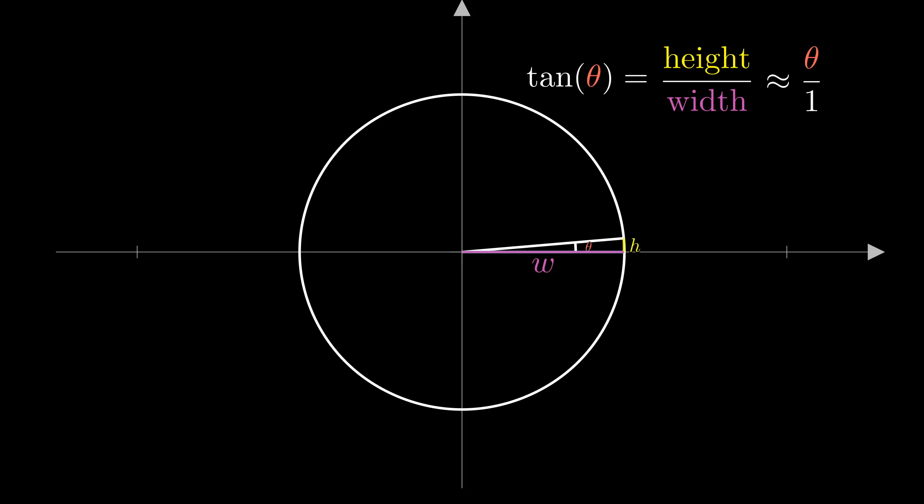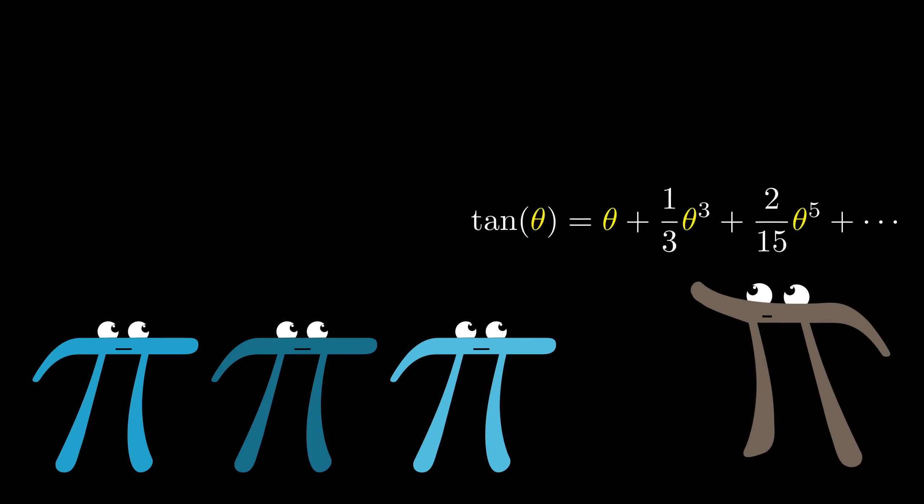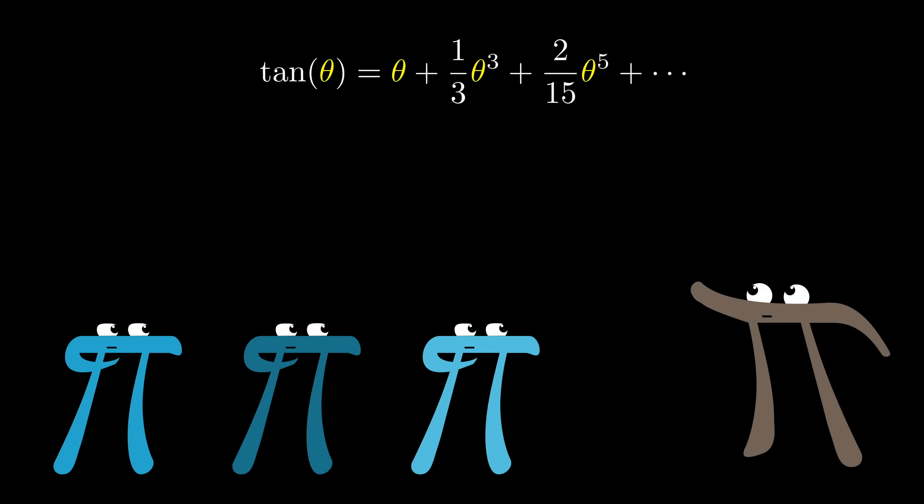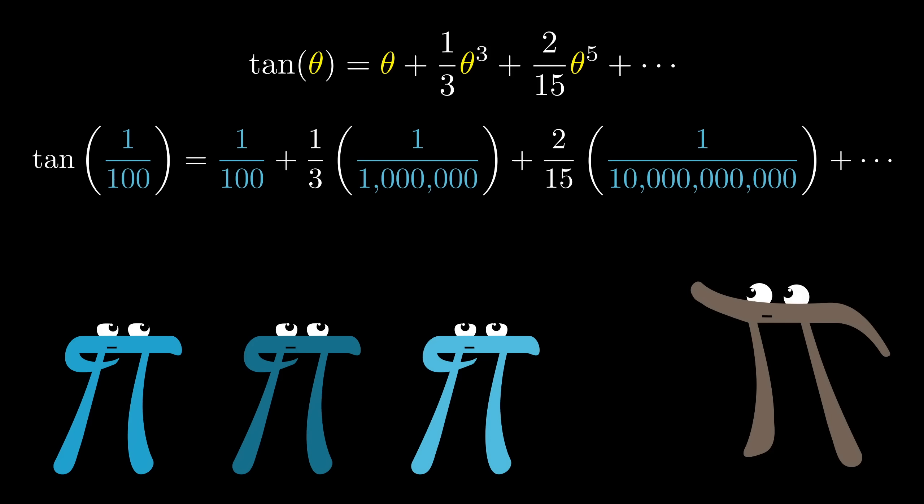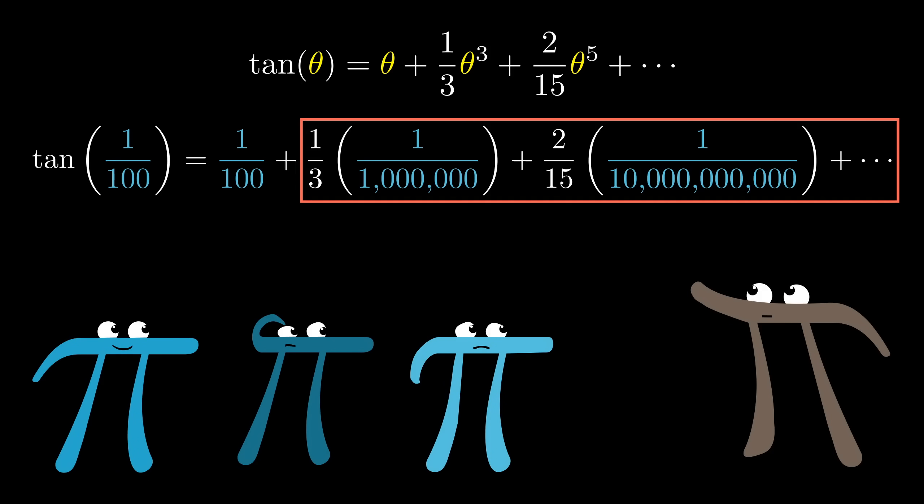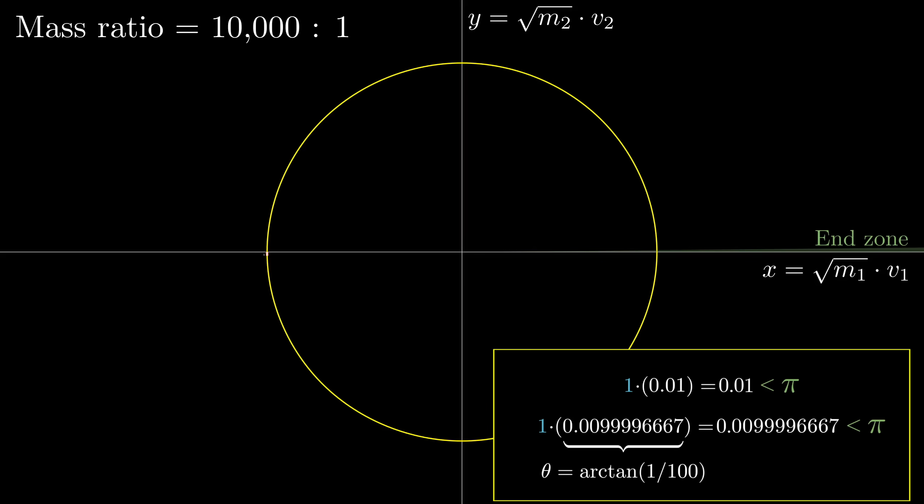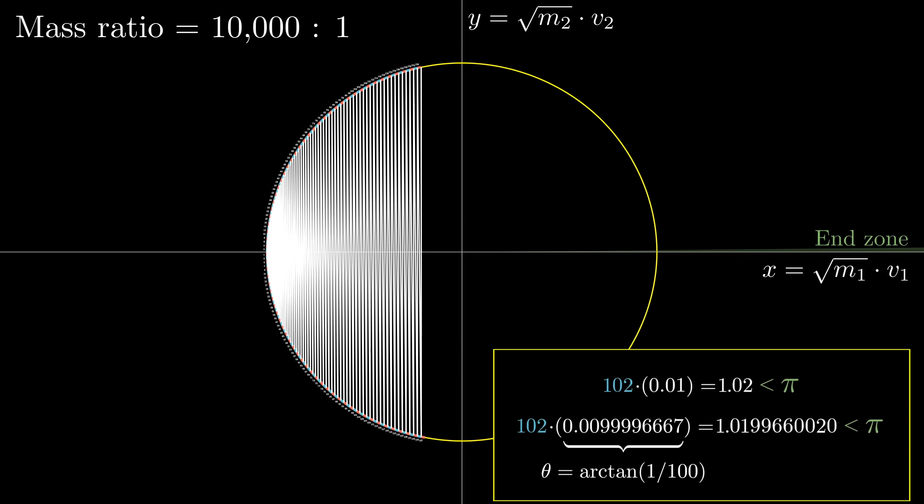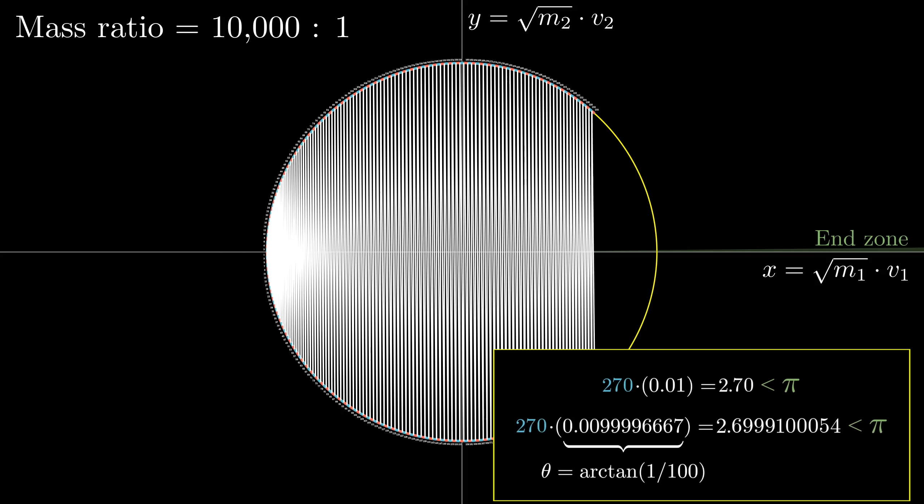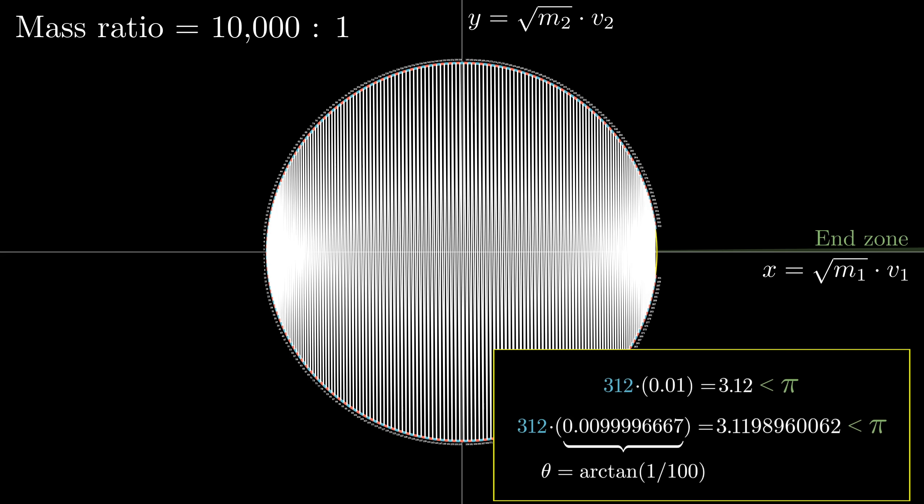To be more precise about it, the Taylor series expansion of tangent of theta shows that this approximation will have only a cubic error term. So for example, the tangent of 1/100th differs from 1/100th itself by something on the order of 1/1 millionth. So even if we were to consider 314 steps with this angle, the error between the actual value of arc tan 1 over 100 and the approximation of 0.01, it just won't have a chance to accumulate high enough to be as big as an integer.